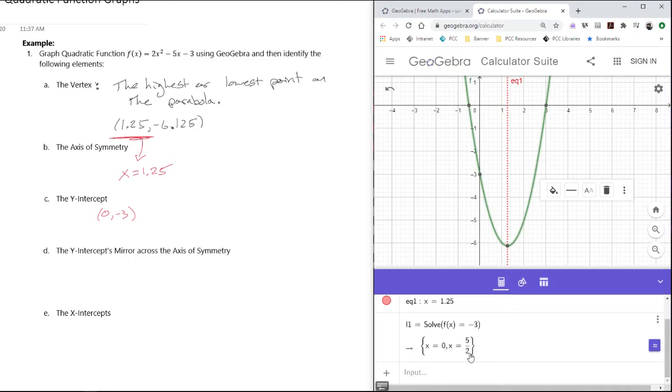So the x-value is 5/2, or 2.5. I know the y-value is -3, and from this solving here I see that the x-value is 2.5. So I'll plot this in GeoGebra.